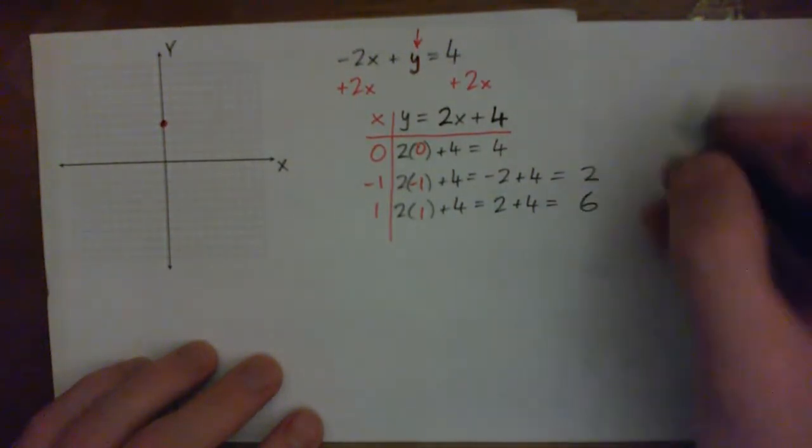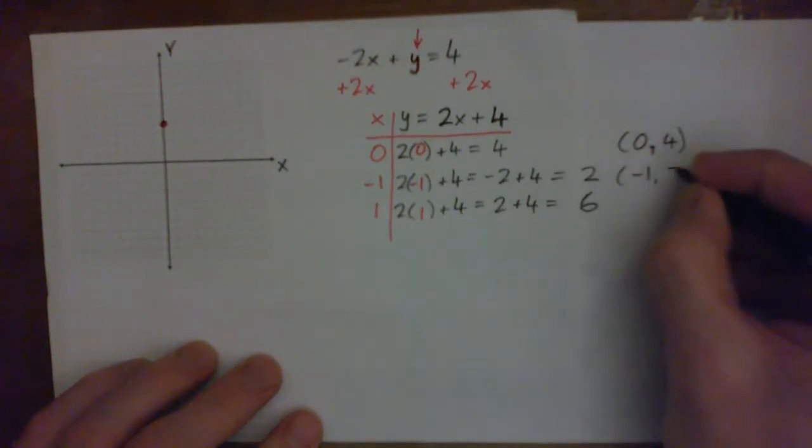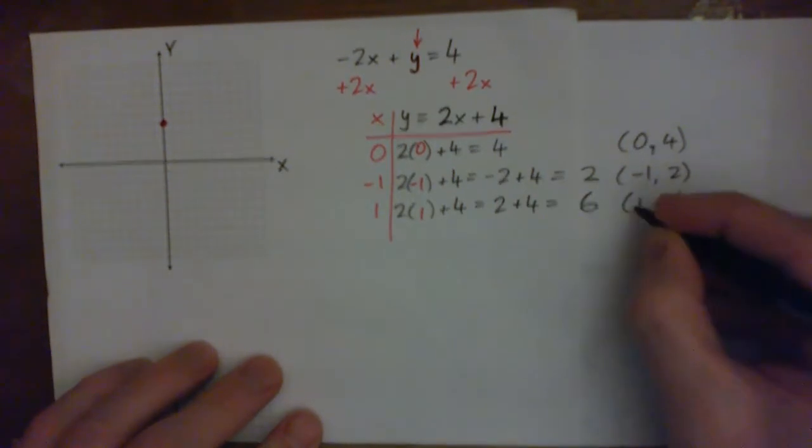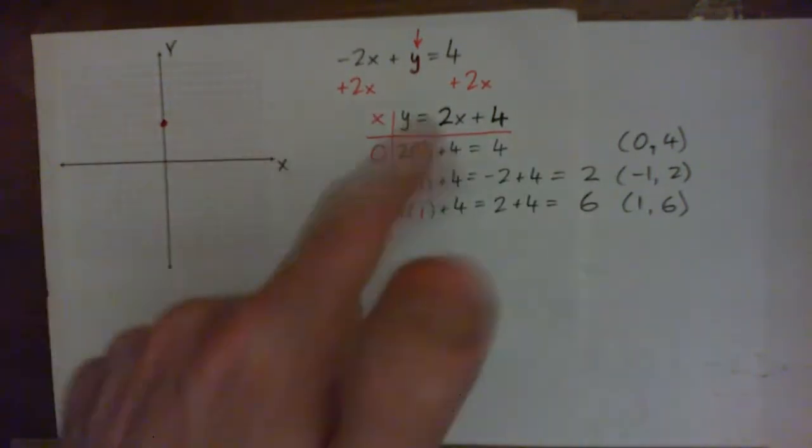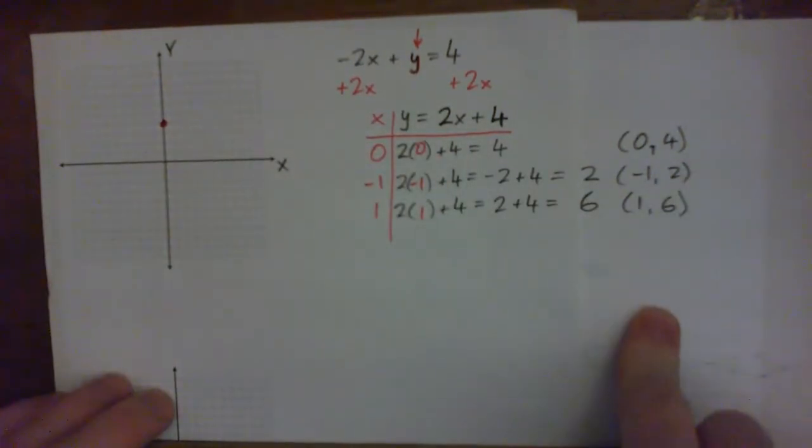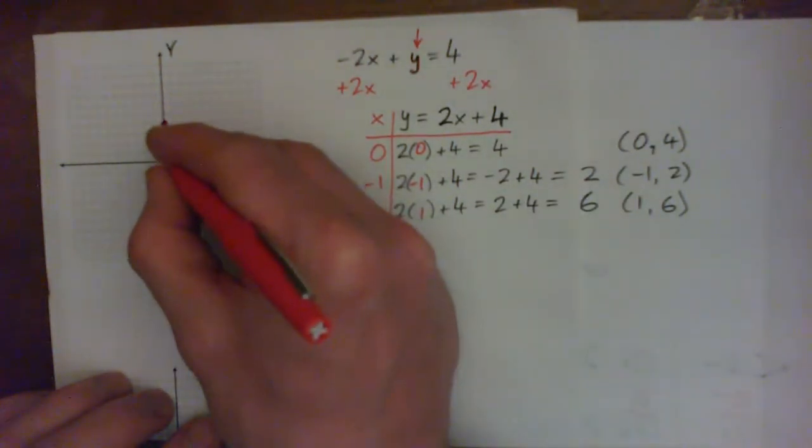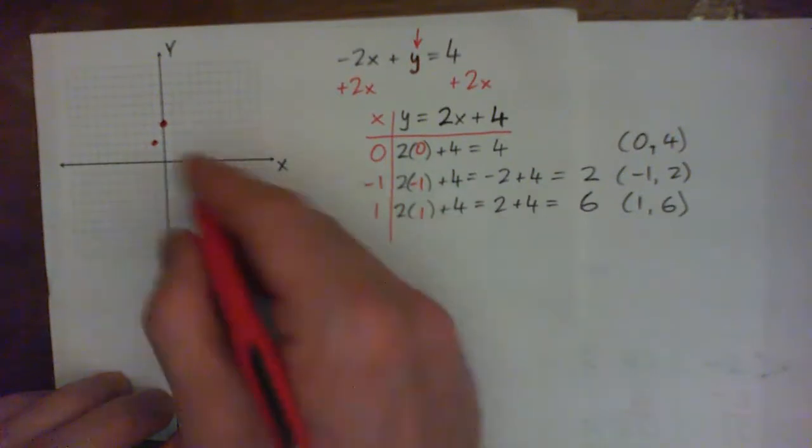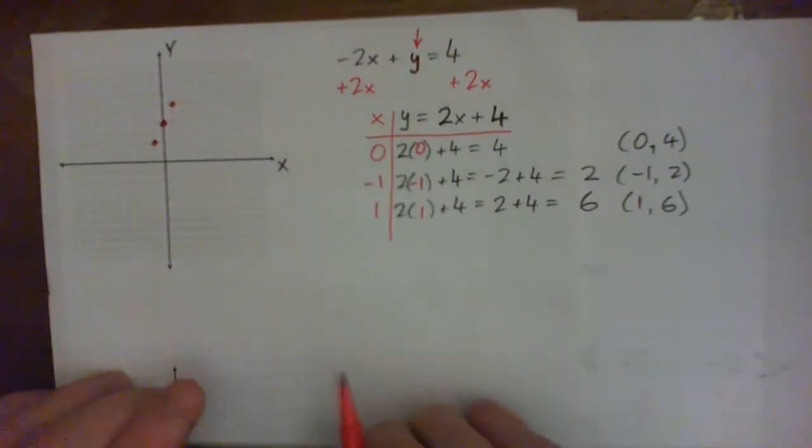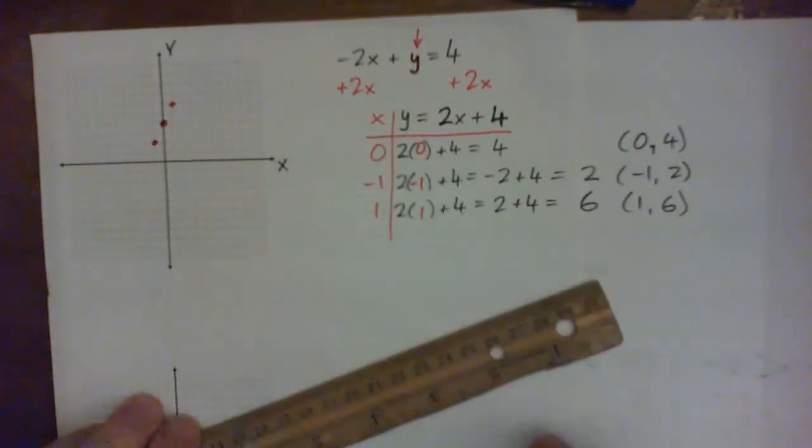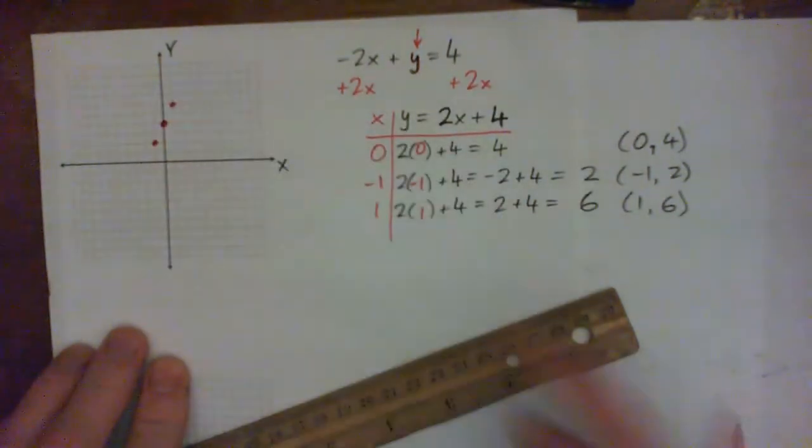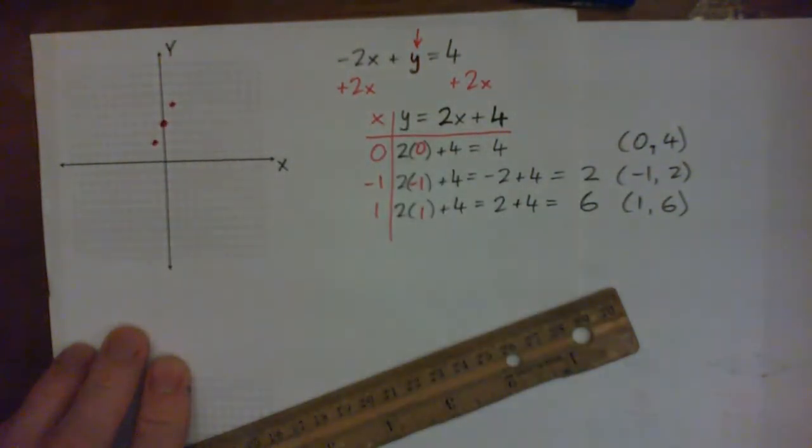With the points, we could write them out like (0, 4), (-1, 2), and (1, 6). But does anyone feel like you even need to do that? These are the x values, these are the y values. You can just read it off the table. You don't actually have to write this out. We're drawing a straight line, so you only need 2 points. You don't need 3. But there's no harm in getting some more.